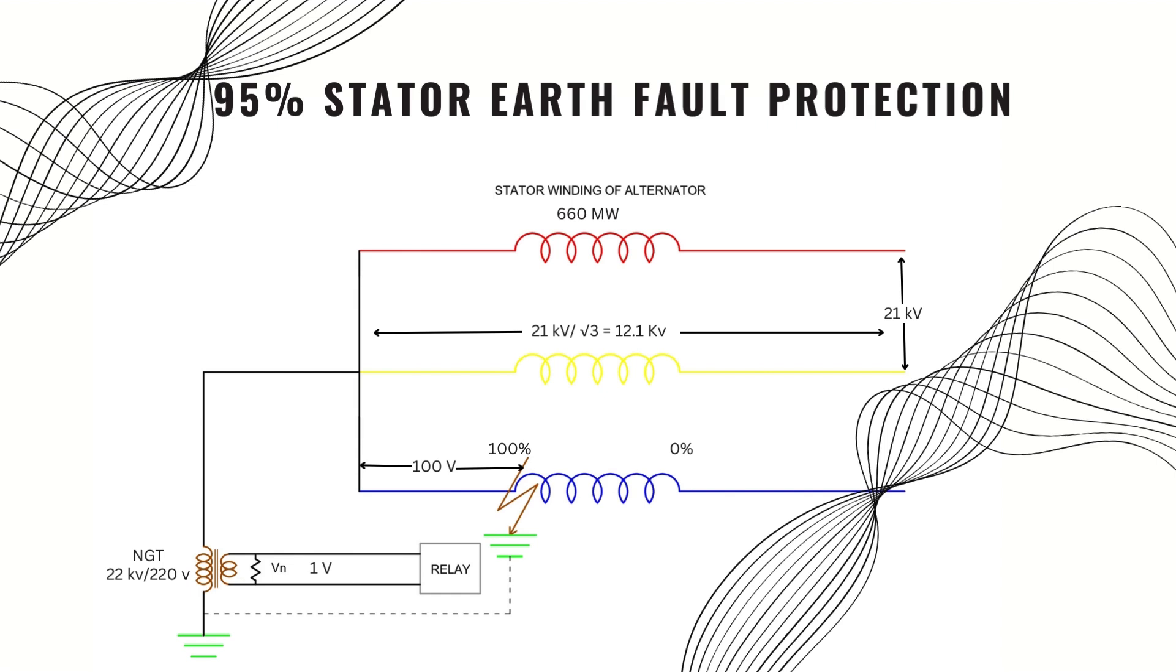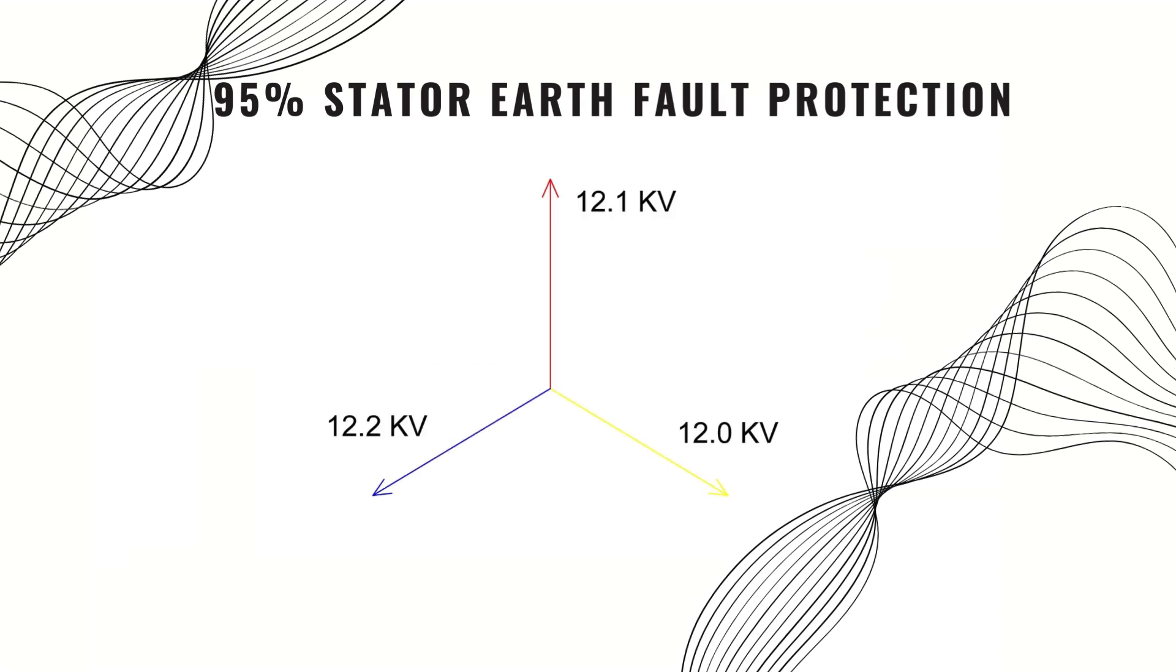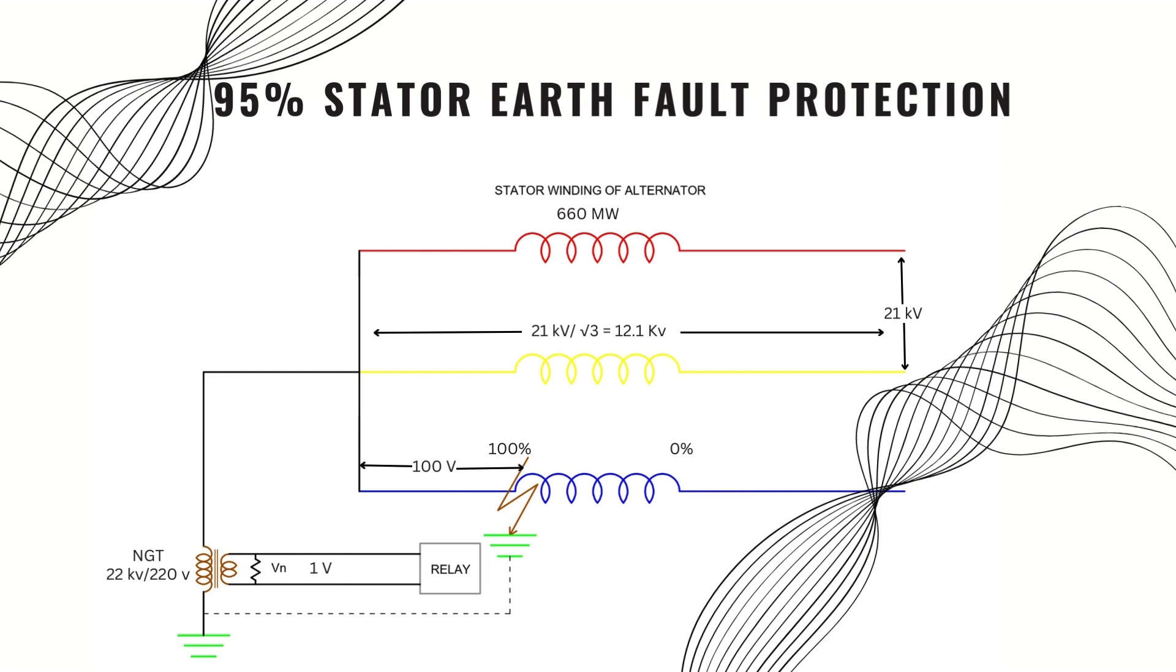Now you may ask, why not we set the relay settings at 0 volts? If we set the settings at 0 volts, then 100% of the winding will be secured. But there is a problem we have discussed earlier that the terminal voltages are not exactly the same. There must be some small unbalance that reflects on the neutral point and for that reason, VN have some small value of voltage which may create a false tripping. And that is why we protect only 95% of the winding in this scheme.